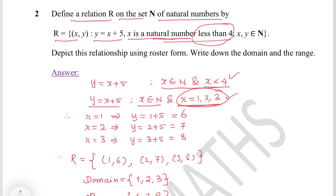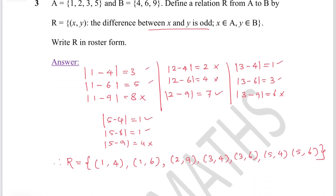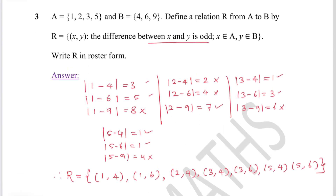When x = 1, y = 1 + 5 = 6. When x = 2, y = 2 + 5 = 7. When x = 3, y = 3 + 5 = 8. Therefore R = {(1,6), (2,7), (3,8)}. The domain is {1, 2, 3} and the range is {6, 7, 8}.